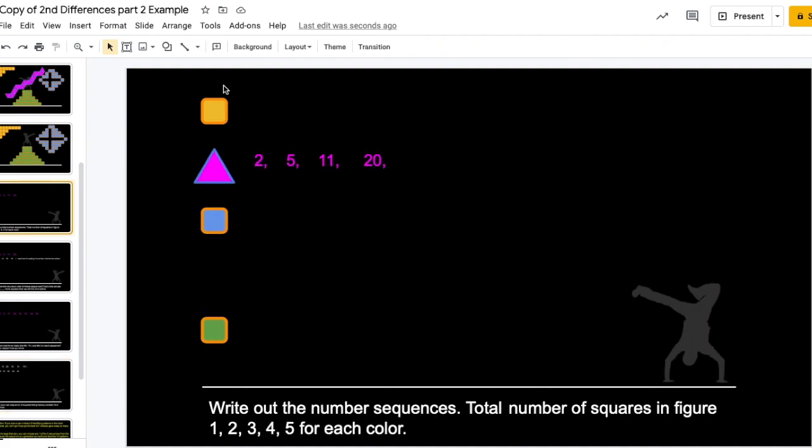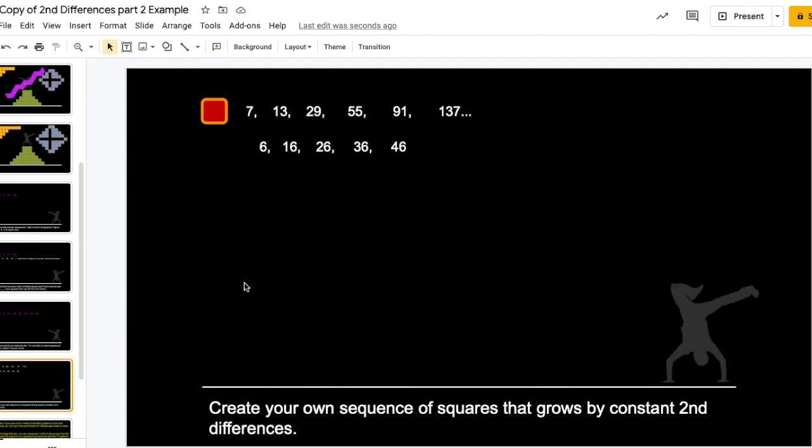You have to do it for the orange, the blue, and the green sequence. So, three times to get full credit. And then make up your own sequence.